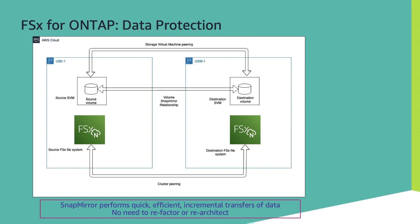vServer peering is where the source vServer in the source file system and the destination vServer in the destination file system are peered. Once the vServer peering is complete, we create a SnapMirror relationship using the source vServer, source volume, destination vServer, and destination volume. We can also add parameters like throttle — if you're running SnapMirrors at scale, you can throttle at a per-stream level or at a global level. You can also specify parameters like schedule, retries, or tiering policy — everything can be defined in the SnapMirror relationship.